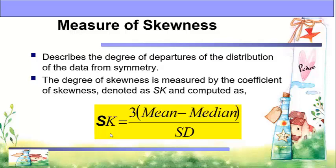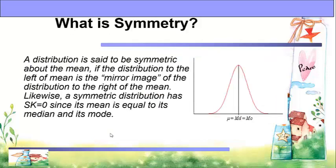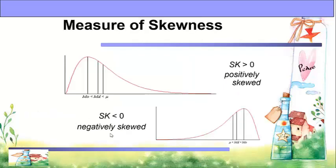Measure of skewness: skewness describes the degree of departure of the distribution of data from symmetry. The degree of skewness is measured by the coefficient of skewness, denoted by SK, computed as: SK equals 3 times (mean minus median) divided by the standard deviation. A distribution is said to be symmetric about the mean if the distribution to the left of the mean is the mirror image of the distribution to the right. A symmetric distribution has skewness of 0 since its mean equals its median and mode. When skewness is greater than 0, it is positively skewed; when less than 0, it is negatively skewed.